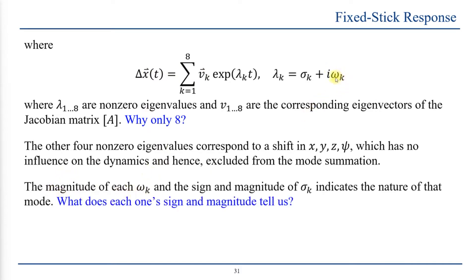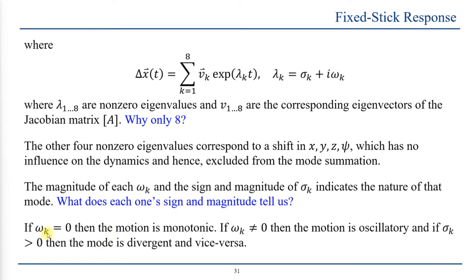The magnitude of omega (the imaginary part of lambda) and the sign and magnitude of sigma (the real part) indicate the nature of each mode. If omega is zero, the motion is monotonic — non-oscillatory. If omega is non-zero, the motion is oscillatory. If sigma is positive, the mode is unstable. If sigma is negative, the system is stable. If sigma is zero or very close to zero, the system is marginally stable — on the verge of divergence.